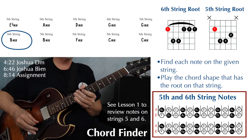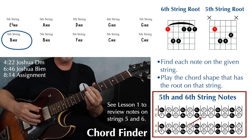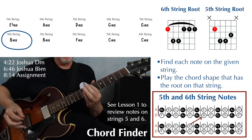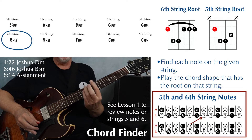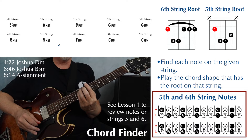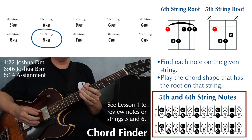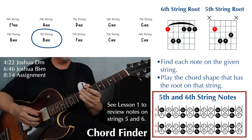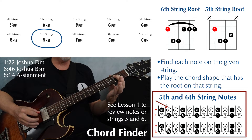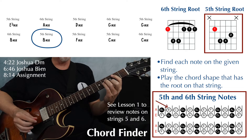Next we have B minor on string six. First, find your B on the sixth string — that's going to be at the seventh fret — and then play that sixth string shape. Another B minor, this time with the root on the fifth string. As always, find your root note first — that's going to be at the second fret on the fifth string — and you play your fifth string minor shape.